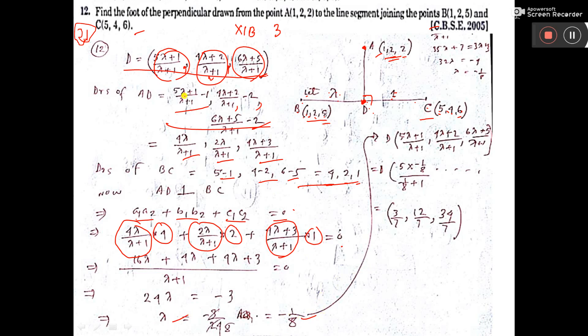Now after getting the value of lambda, see D point I calculated here. You put the value of lambda in this case. So you will get the point and that is the answer. So you will get the value of lambda.